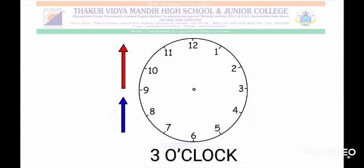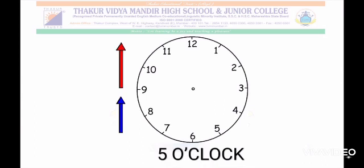Now let's learn to place the hands and show time. Here we have to show the time 3 o'clock, so let's place the big hand pointing to number 12 and the small hand pointing to number 3. Thus this clock shows 3 o'clock. To draw 5 o'clock, we make a big hand pointing towards number 12 and then a small hand pointing on number 5. Thus this clock shows the time 5 o'clock.